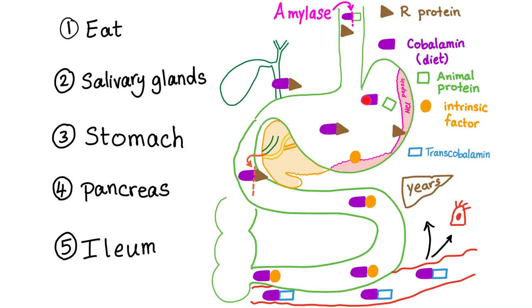We have this vitamin B12 and this animal protein. The hydrochloric acid will convert pepsinogen into pepsin. Also, pepsin will do the same thing. It will destroy the relationship or the bond between the cobalamin and the protein. So now cobalamin is free.